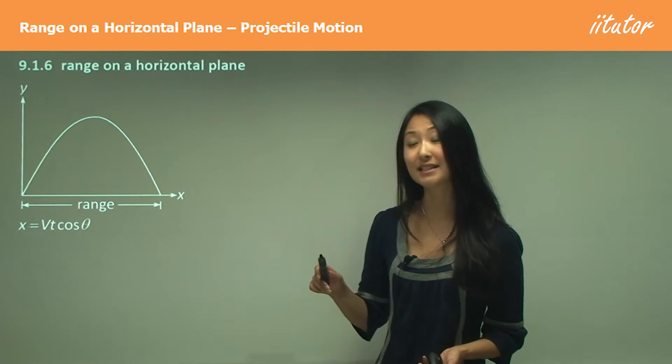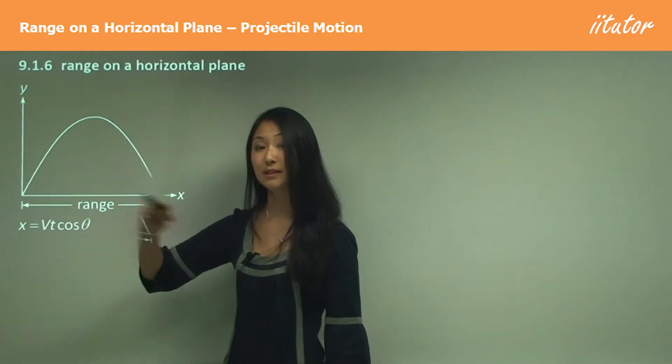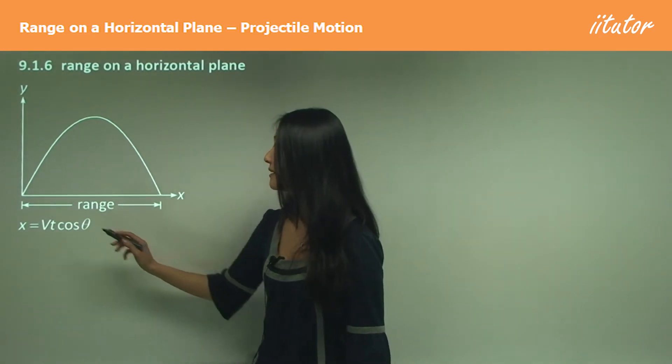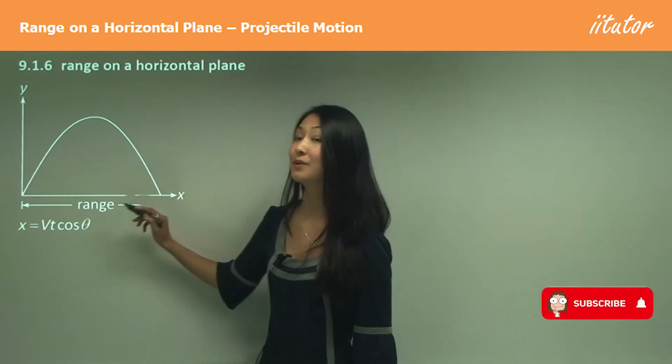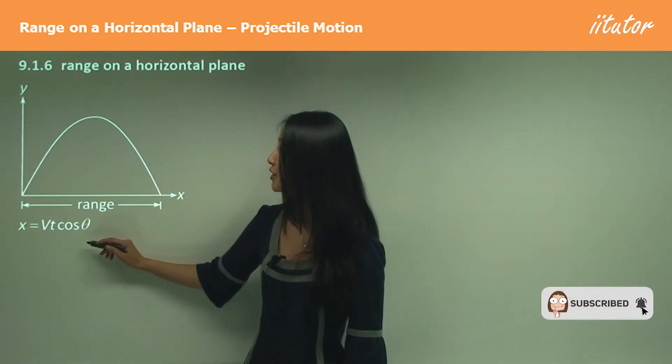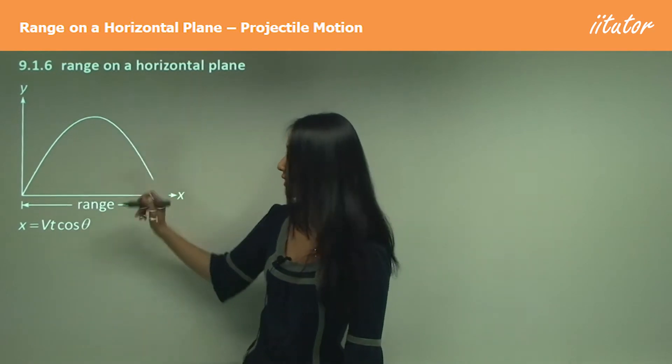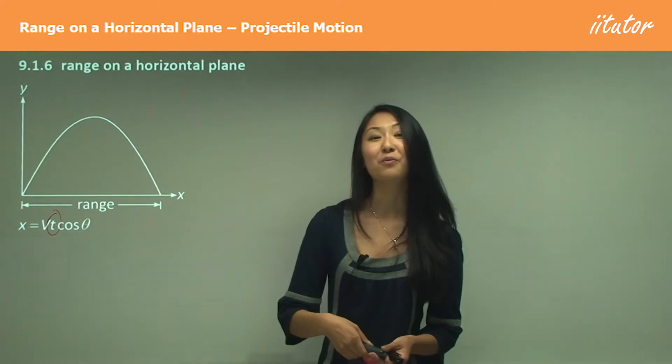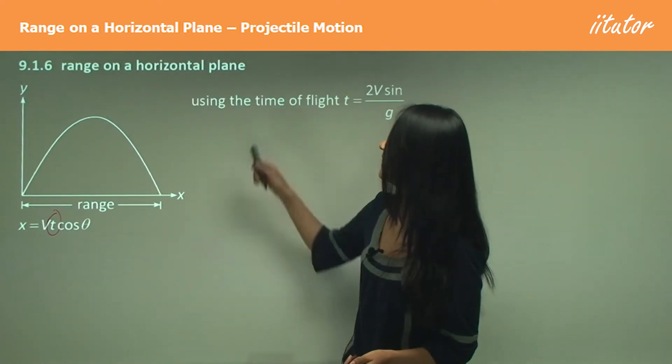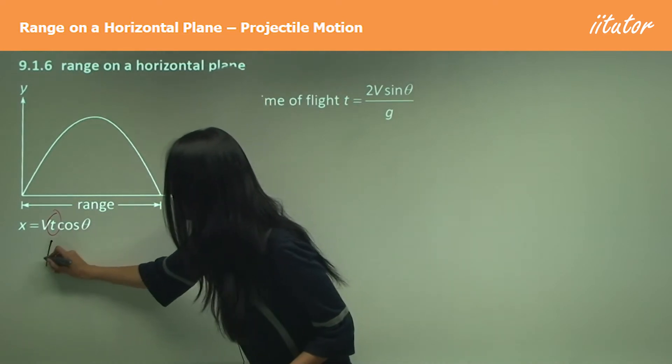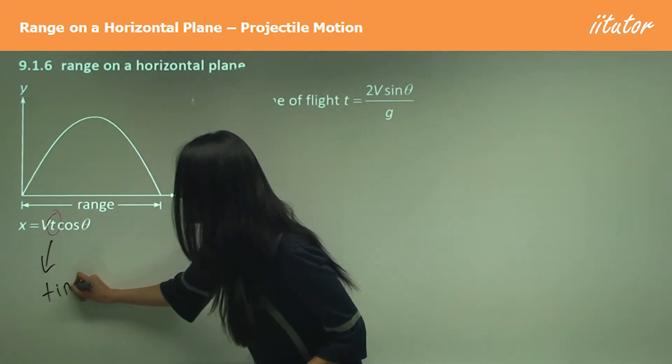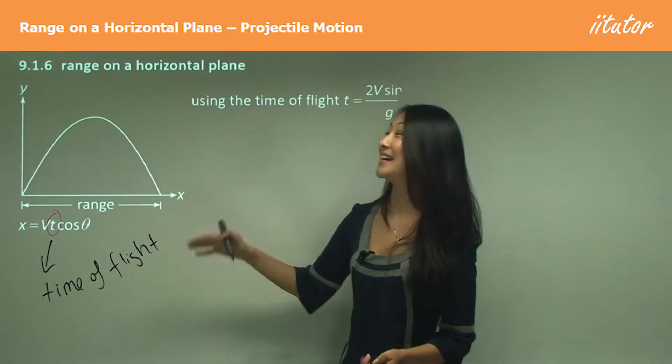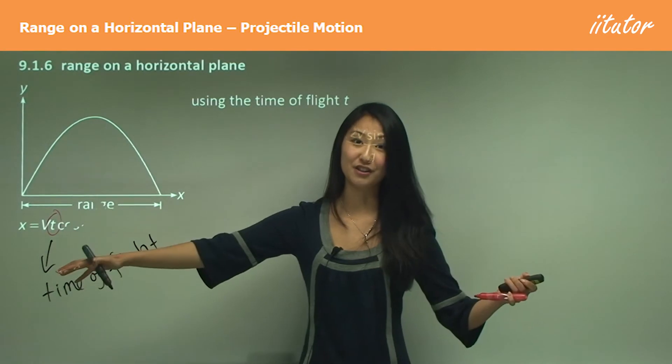Remember how we worked out that our horizontal displacement was given to us by VT cos theta, so that means this displacement here is given to us by that equation. We're usually given the angle and the velocity, so what's not given to us is the T there, but what does give us the T is the time of flight. This here means we need to substitute in the time of flight to work out the range. Without the time of flight we can never work out the range of the horizontal displacement.